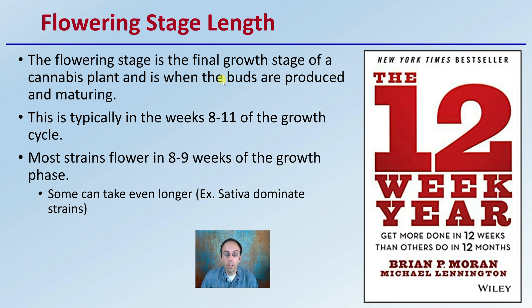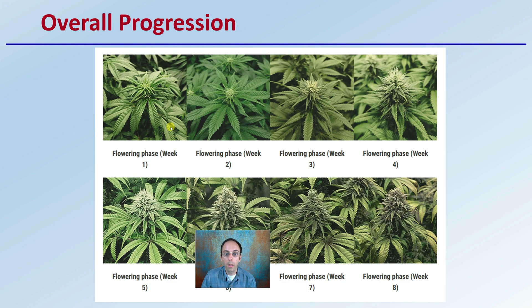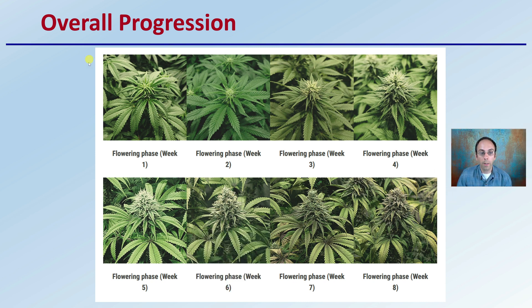Everyone wonders what week in flower they are in. This kind of offers a good visual guide as far as the flowering phase, which is initially week one, two weeks in flower, three, four, five, six, seven, and eight. We can see how that progression changes as far as weeks into flower. This may depend a little bit on the variety you might be growing, but at least this provides a general overview of the stage of flower your plants might be in, particularly to determine when those early weeks are occurring.